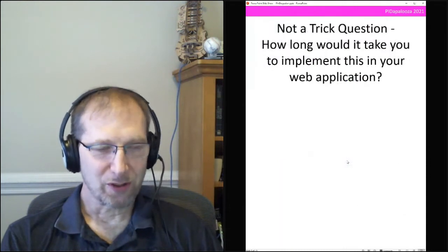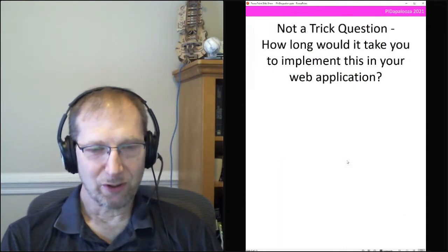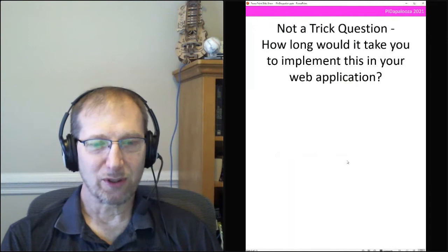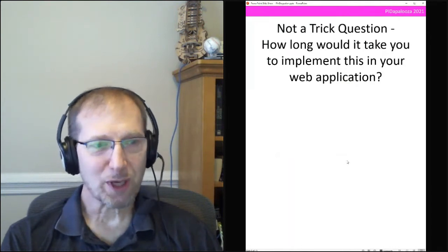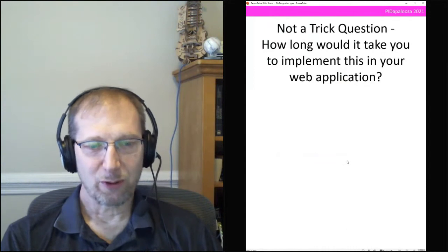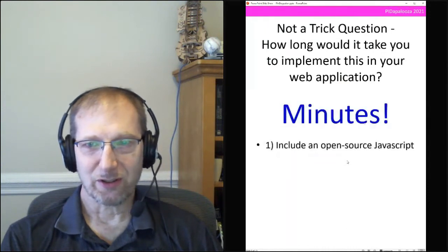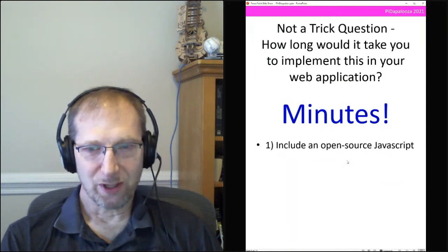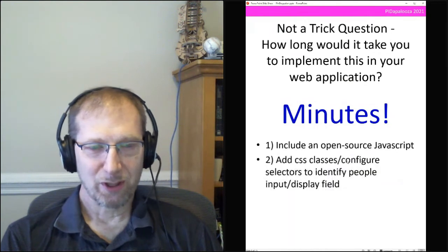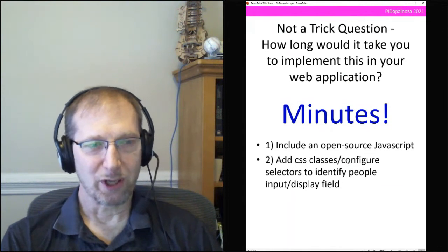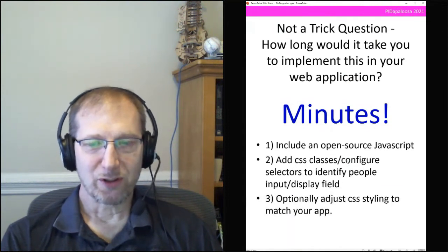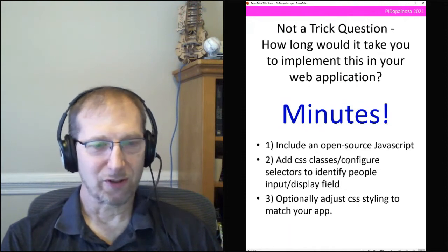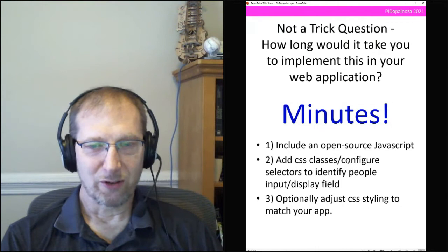Now, not a trick question: if you've seen another repository that just gives you a plain text ORCID input, how long would it take to implement the richer experience? After what we've done — which I'll describe next — the answer is basically minutes. You can drop in an open source JavaScript, do a small amount of work to tell it where your input and output fields are on the page, and optionally do some CSS styling to match fonts and appearance.